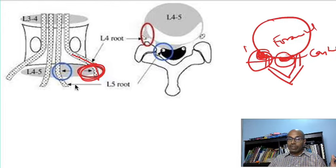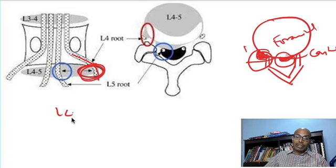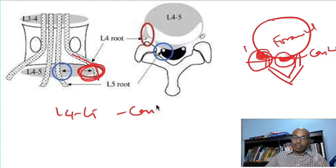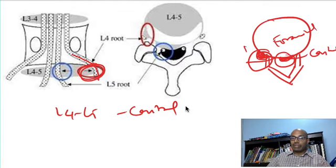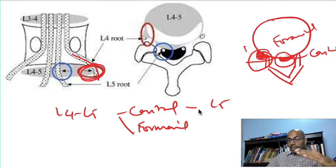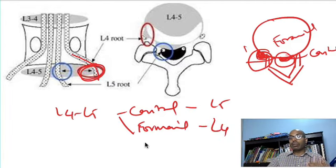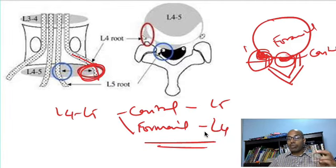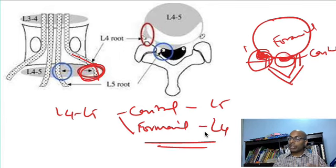However, the central disc prolapse presses on the nerve which travels down inferiorly and then exits the spinal cord. Therefore it is L5 root for an L4 L5 central disc prolapse. If it is central disc prolapse, the inferior exiting nerve is affected and that is the L5 root. If it is a foraminal disc prolapse on the side, the nerve travels acutely sideways and exits, therefore the corresponding nerve root L4 is affected in foraminal disc prolapses. This you must understand. Please play through this a few times because it has been asked previously and will continue to be asked in your exams.